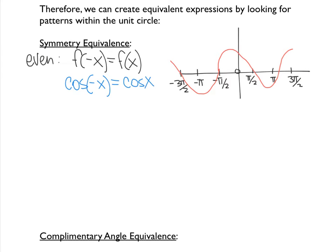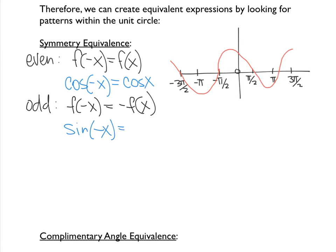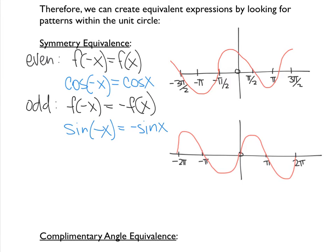An odd function occurs when you plug in a negative value for x and you get the negative y value — negative f of x. An example is your sine function. If you plug in a negative value for sine of x, you get negative sine x. Graphically, all your negative x values will have a corresponding negative y value.